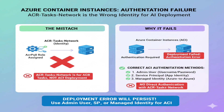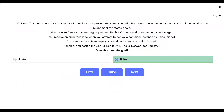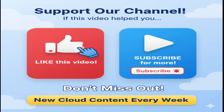Container instances need to authenticate directly with the registry to pull images, and this requires either admin user credentials, service principal authentication, or managed identity — not a role assignment to a task's network identity. The deployment error will persist because the container instance deployment process cannot use the ACR Tasks Network identity to authenticate and pull the image from Registry 1. If this video is helping you, support us by hitting the like button, and don't forget to subscribe for more content like this.